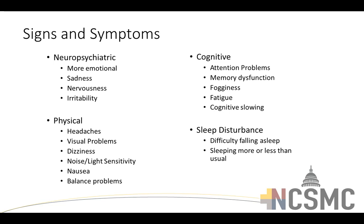Neuropsychiatric symptoms include being more emotional than normal, depressive symptoms, anxiety, irritability, and in some cases personality changes. Cognitive symptoms involve higher executive function — memory (both short-term and long-term), working memory, and processing speed. People often complain of fogginess, feeling like everything's slowed down, fatigue especially with cognitive loads, and inattention-type symptoms.